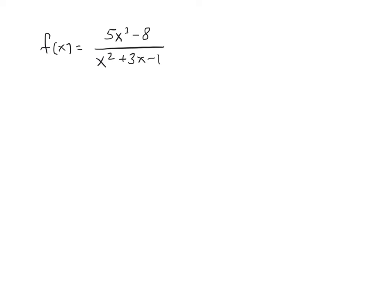So we do have an oblique asymptote, and we will find it by dividing. So we've got 5x cubed. I'm going to put in a 0x squared, a 0x, and then the minus 8.